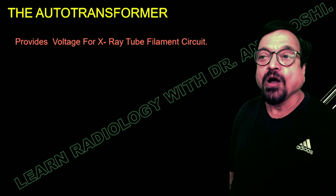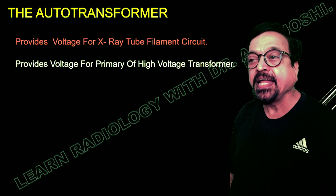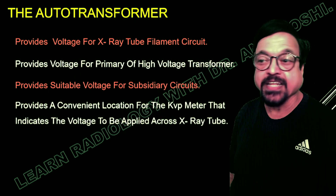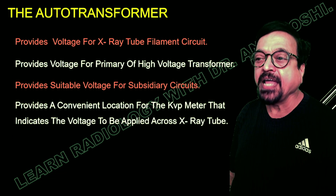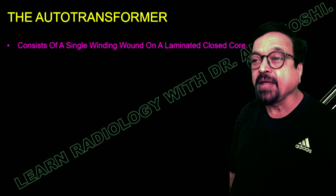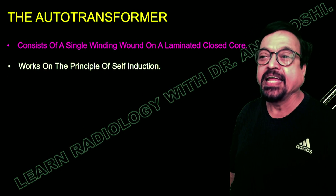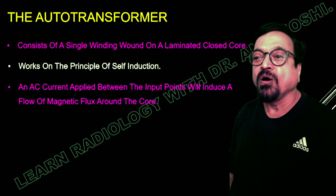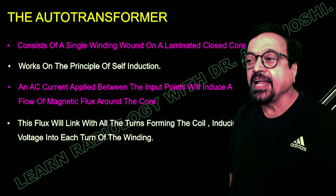The auto transformer provides voltage for the x-ray tube and filament circuit. It provides voltage for the primary of the high-voltage transformers, suitable voltage for subsidiary circuits in the x-ray unit, and a conventional location for the kVp meter indicating voltage to be applied across the x-ray tube. KV, mA, and seconds are the three factors required for radiography. The auto transformer consists of a single winding wound around a laminated closed core with insulation, working on the principle of self-induction. AC current applied induces a flow of magnetic flux around the core.